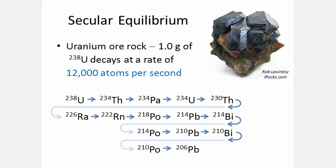Each blue arrow represents a decay rate of 12,000 atoms per second. The decay chain is in a state of secular equilibrium. The nuclides in this rock all have different half-lives and exist in different amounts, so why do they all decay at the same rate? Let's look at a model that makes this easier to understand.